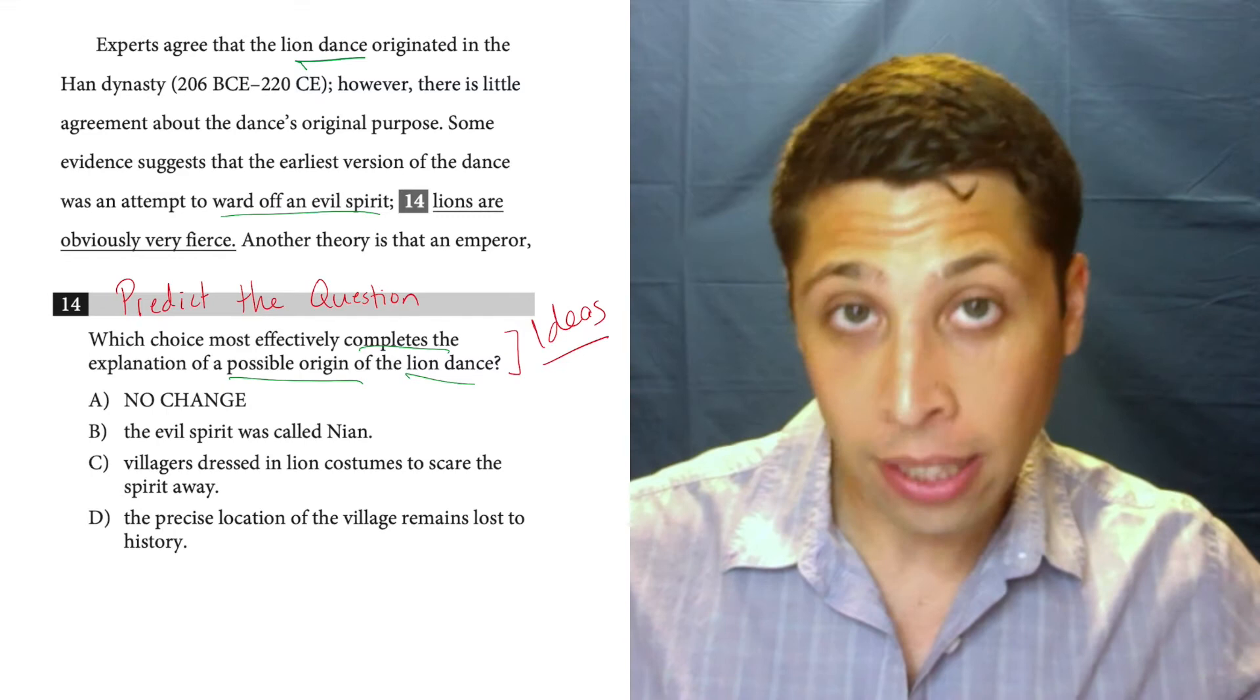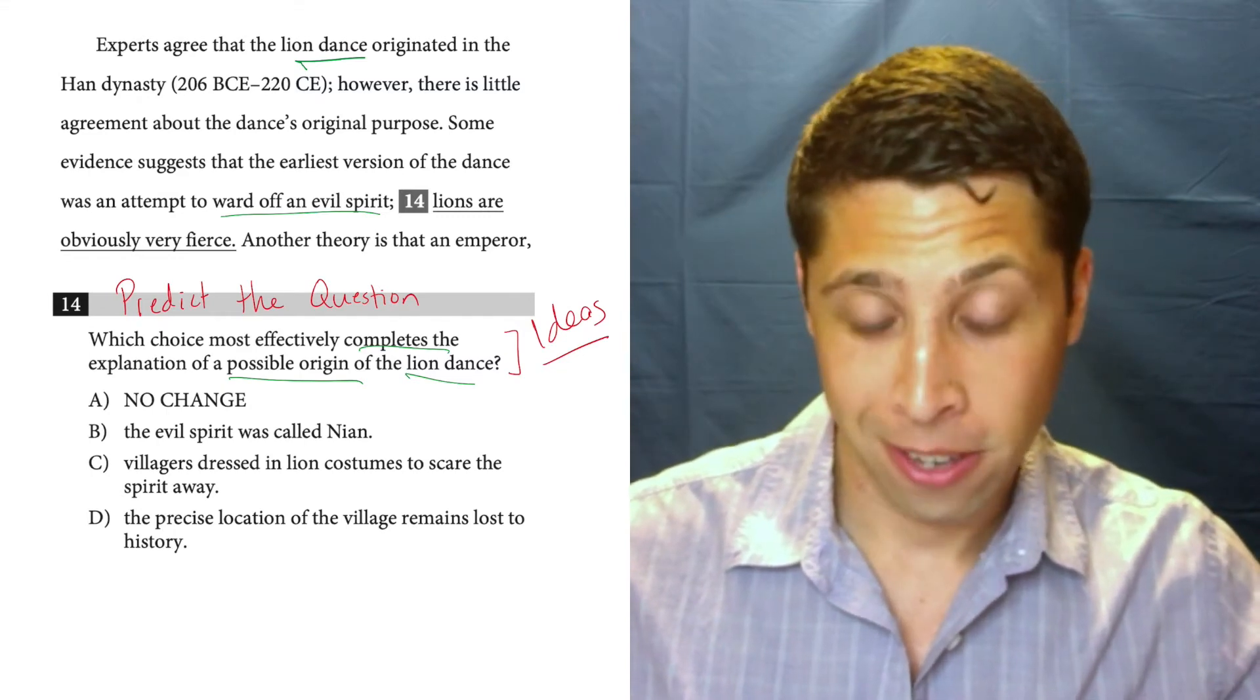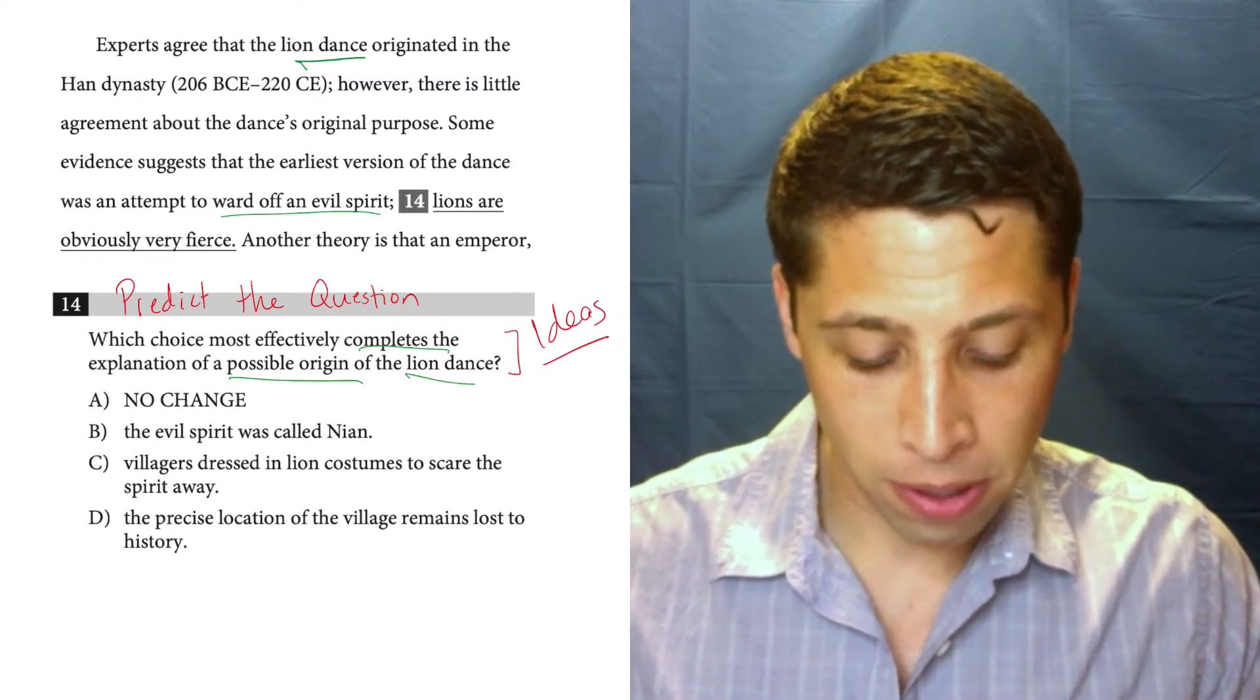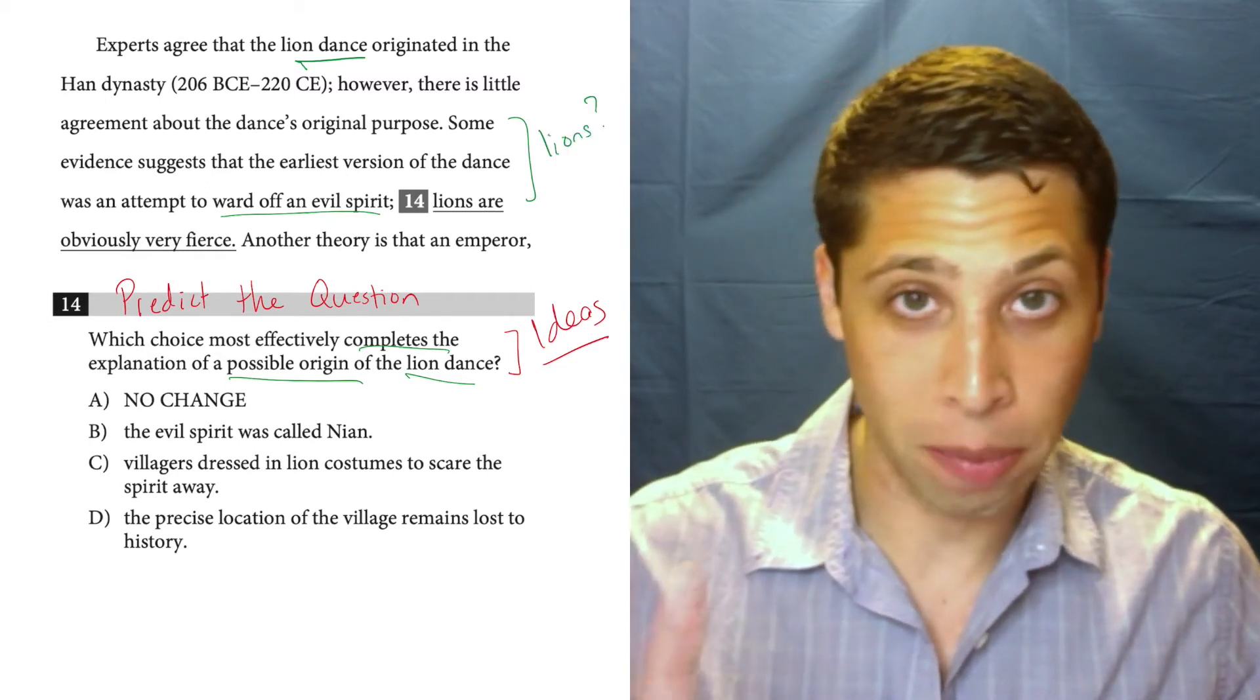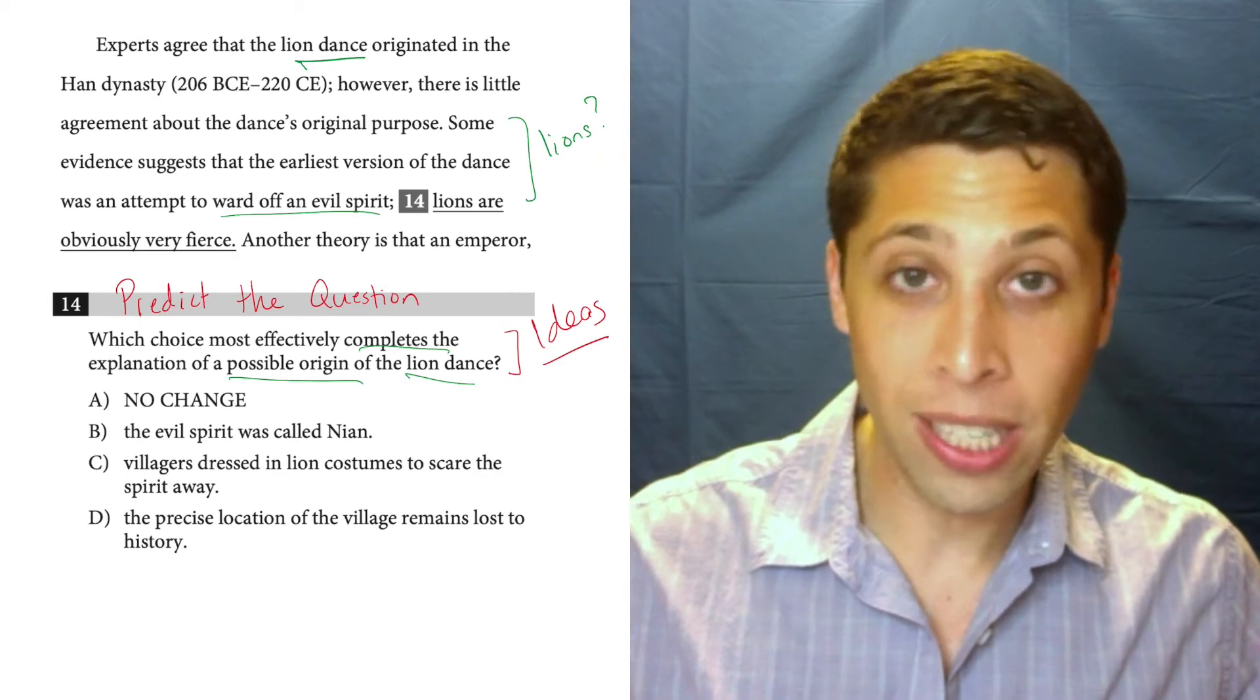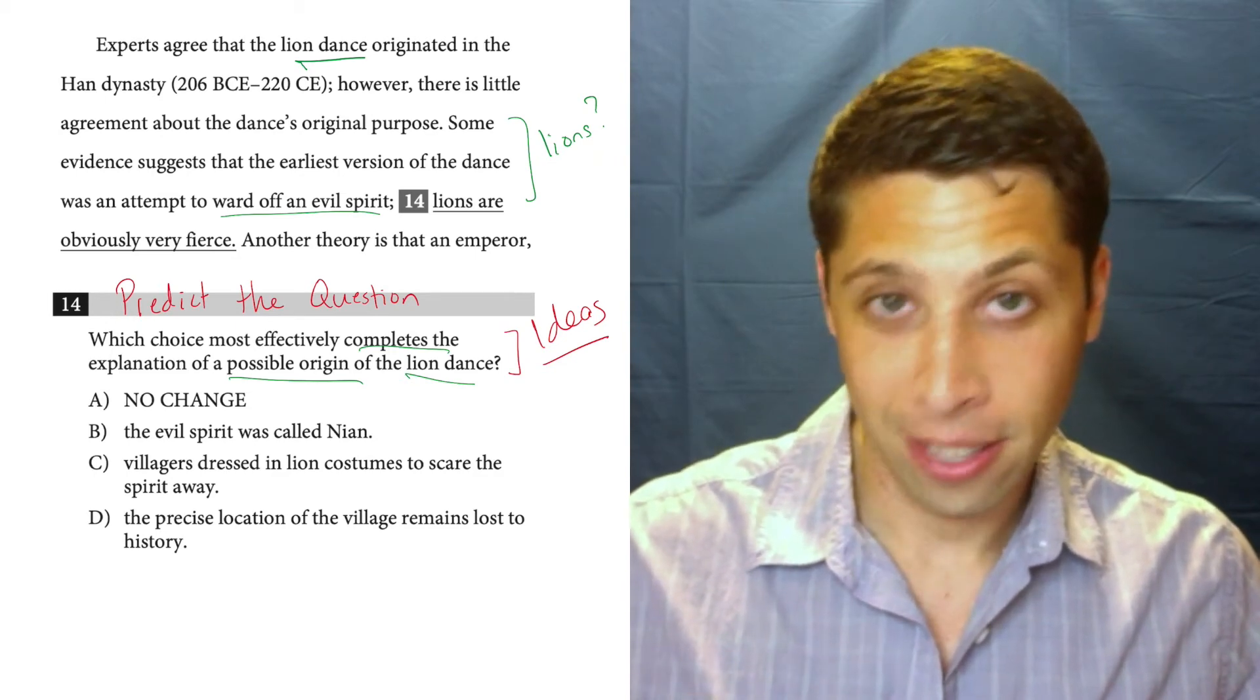So now we got to bring the lions into this, right? Notice the first part of this sentence doesn't talk about the lions at all. It's just talking about the dance. So we need to connect the dance to the lions.